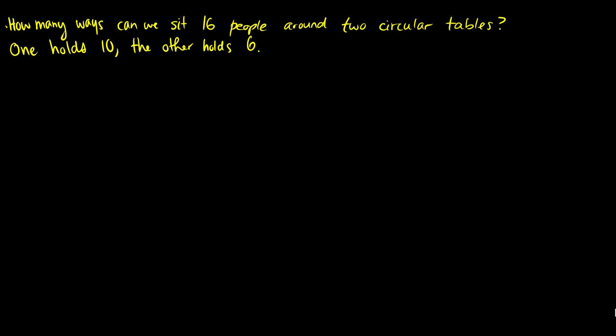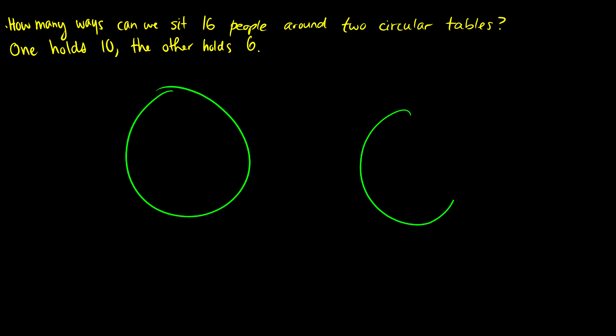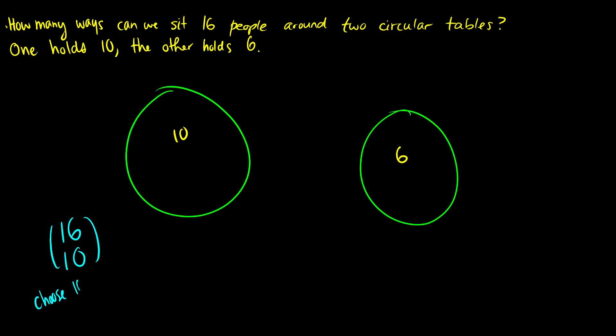This last one is a little more challenging — it uses some combinations. This is the circular table question: how many ways can we seat 16 people around two circular tables where one holds 10 and the other holds 6? The first step is we have to choose 10 people to go to the first table, so that's 16 choose 10.